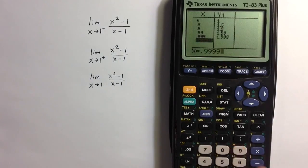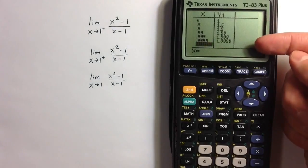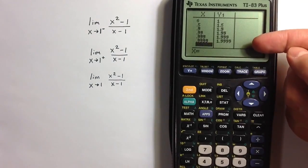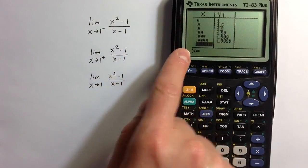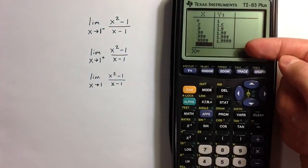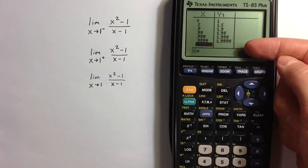And what we see from the y1 column is that as x gets closer and closer to 1, it seems to indicate that the y values are getting closer and closer to 2.